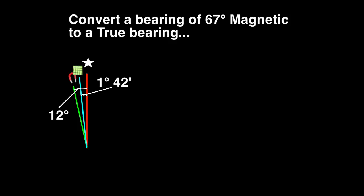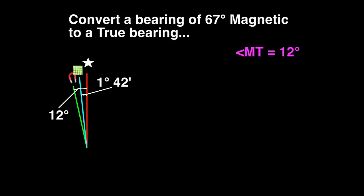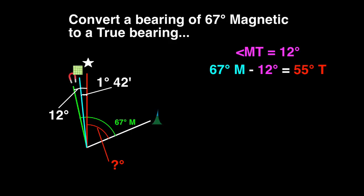Problem 2. Convert a bearing of 67 degrees magnetic to a true bearing. Magnetic north is 12 degrees west of true north. Grid north is 1 degree 42 minutes west of true north. The angle between true north and magnetic north is 12 degrees. Draw the 67 degree magnetic bearing onto the diagram. The true bearing we are seeking is smaller than the magnetic bearing we were given, so we subtract the 12 degree difference from the 67 degree magnetic value to get the answer of 55 degrees true.